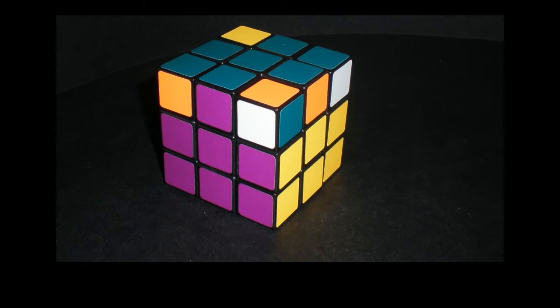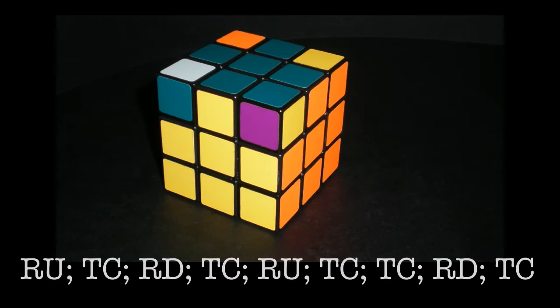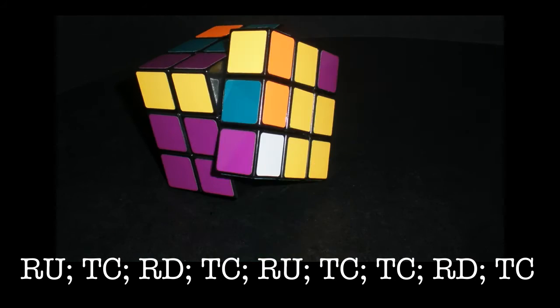Now we should have a cross. The aim is to match up all the middle edge cubes to the correct colours. They should be perpendicular to each other so hold one at the back and one at the right and use this.